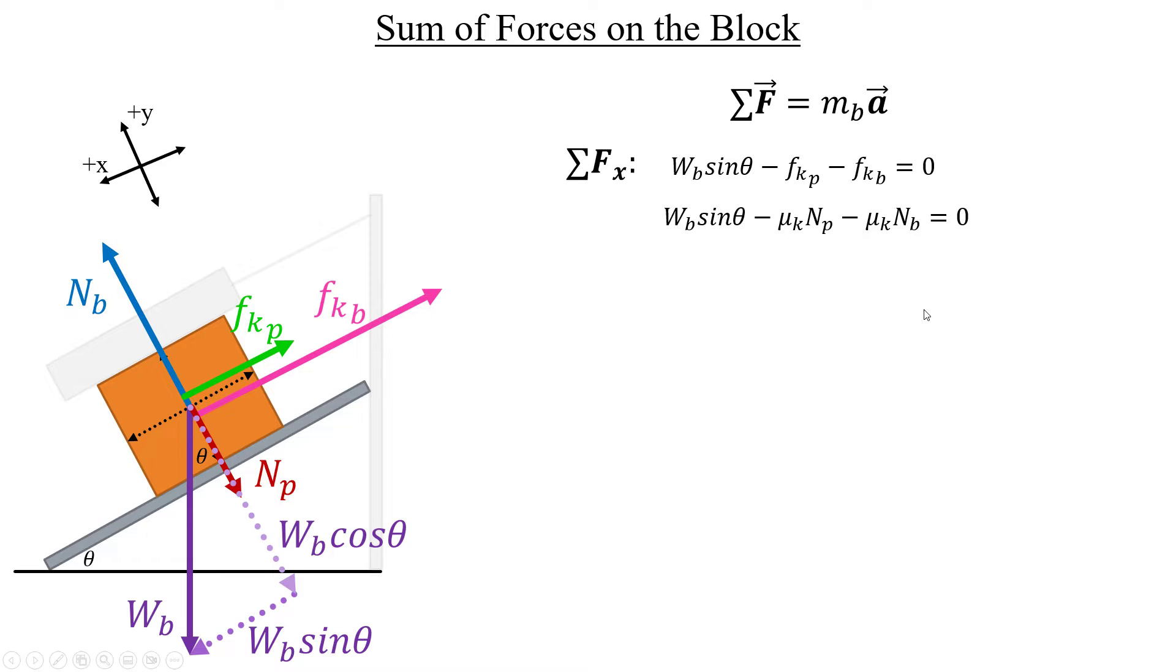Next, we can move both of these coefficient terms over to the right-hand side, like this. And since we want that coefficient, we can factor it out from both terms and then divide both sides by the sum of the normal forces of the block and the plank, like this. And we have our coefficient expression now. Cool. We're approaching the end. Getting close to being done here.